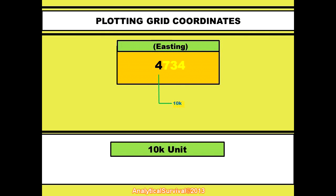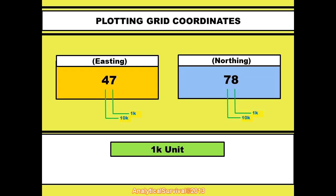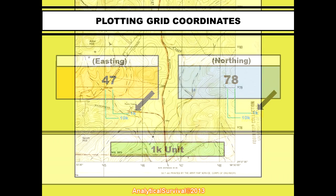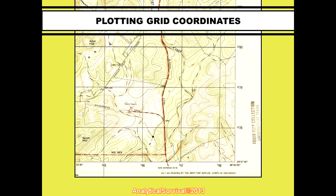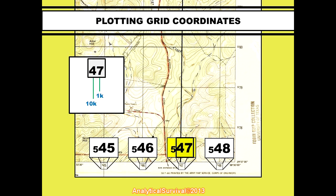To show a one-kilometer grid square on the map, we need to include the one-kilometer place value denomination in both Easting and Northing. A complete grid coordinate has both Easting and Northing — both the x-axis and the y-axis. It's important to note that both Easting and Northing end in the same place value denomination, which is the one-kilometer place value. When determining a grid coordinate, we first plot eastward, working from left to right, and afterwards we plot northward, working from bottom to top.